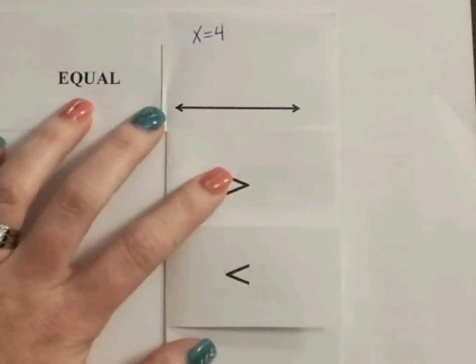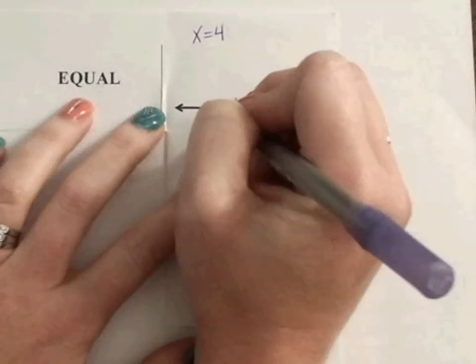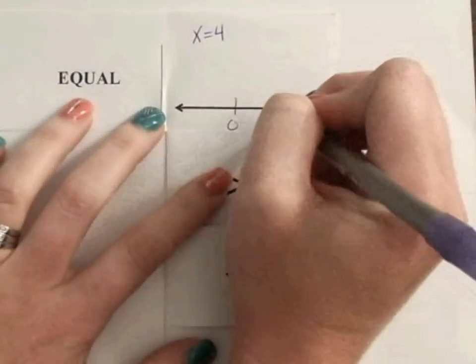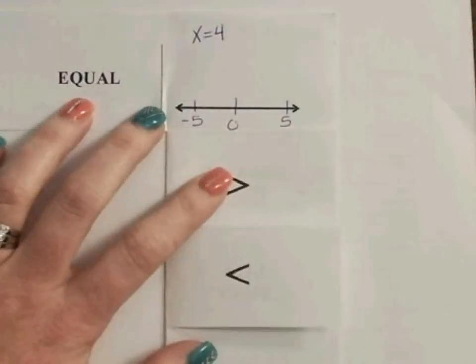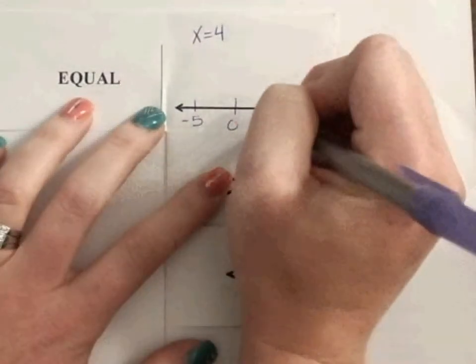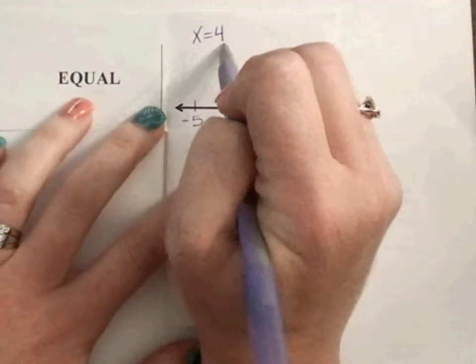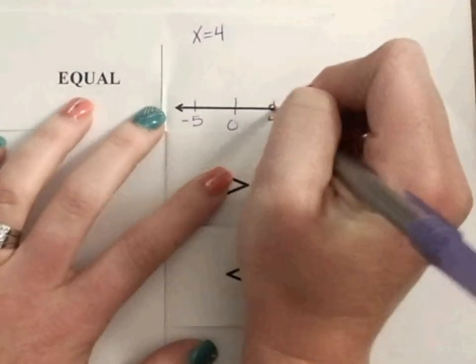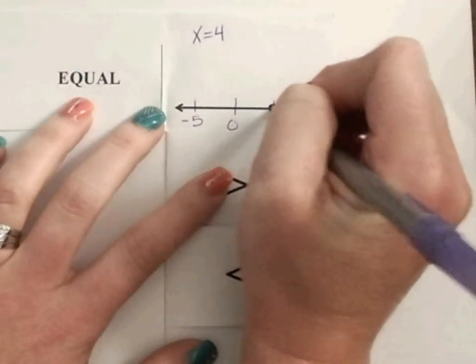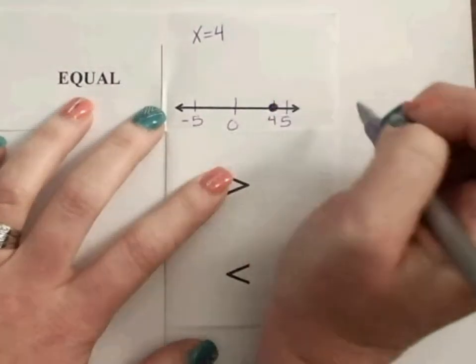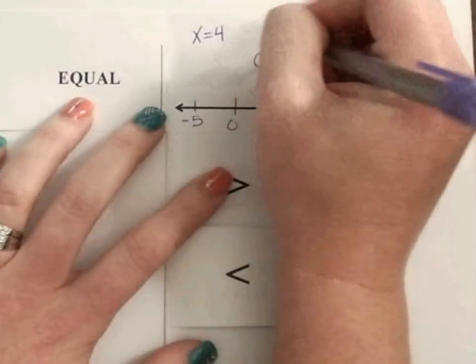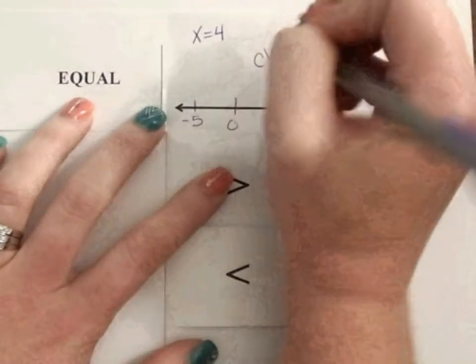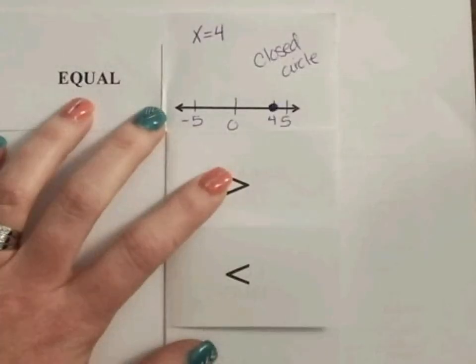If I have a number line, I'm going to put 0 in the middle, 5 on the right and negative 5 on the left. Now I want my answer to be at a positive 4. So I would find 4 on the number line. And because I know it is exactly 4, no more, no less, I am going to draw a closed circle on 4. I don't have any lines coming off of it or any arrows. That means that we have one definite answer and that answer is at 4 only.